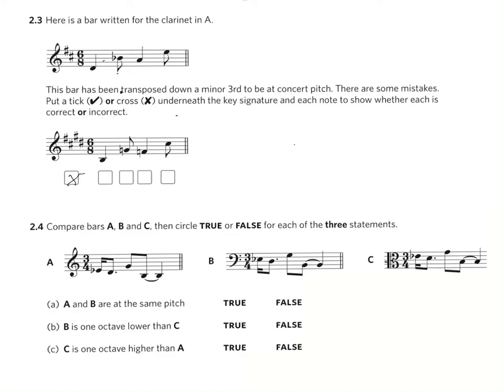B flat down to G: B, A, G. The numerical value is correct. A down to F: A, G, F. Again the numerical value is correct. E down to C: E, D, C. So once again the numerical value of all those transposed notes is correct.